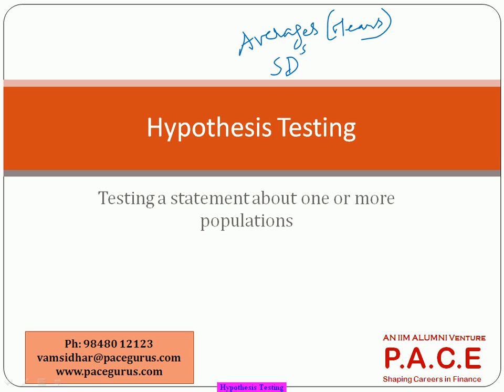As a statistician, you will make statements regarding the relationships between two variables. Every calculation we do has a statistical testing part. We have done calculations regarding means, standard deviations, and so on. The statistical testing part tells you: from the sample, can I interpret it to a population? Whatever statement you have made, you make it on a population but using the sample. Can I test it, and should I accept or reject that statement?